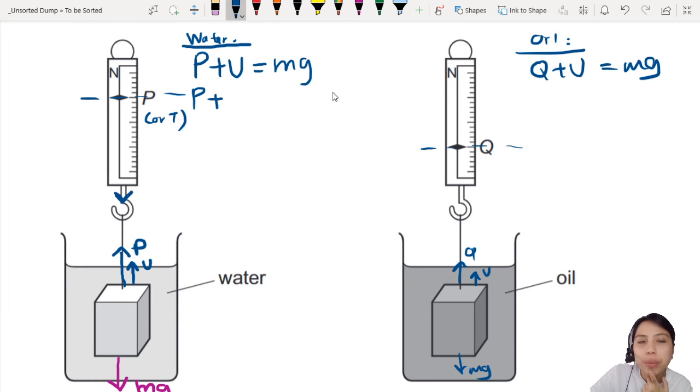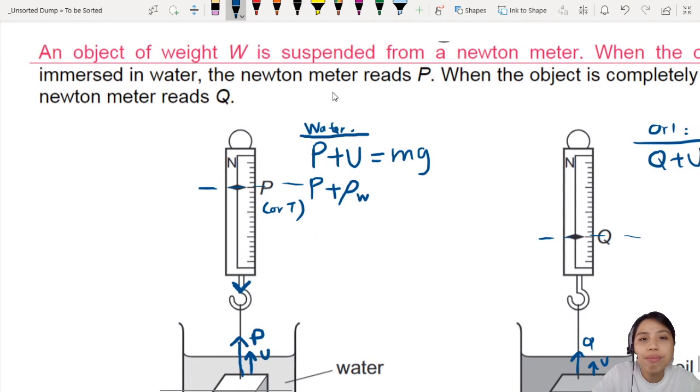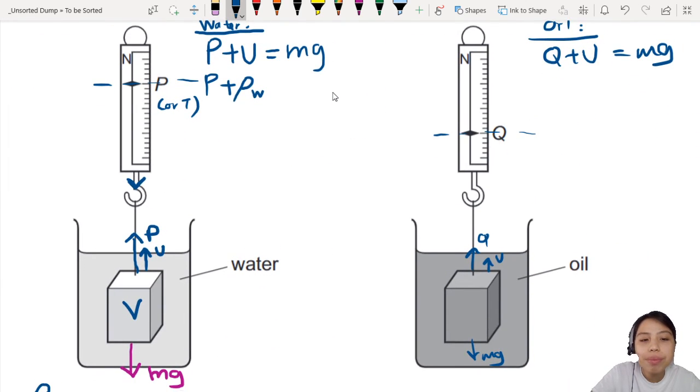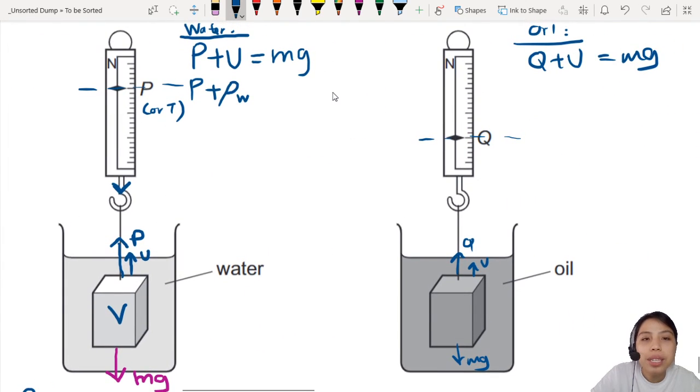If you remember the formula for uptrust, uptrust is ρVg. Rho is the density of the fluid, so density of water. That's what we want. Rho V is the volume of this block. Is it the same block for both? Yeah, same thing. They have the same mass, same W. So ρVg equals to mass of this block, mg.